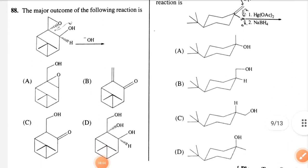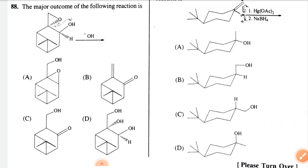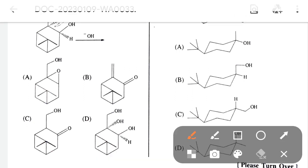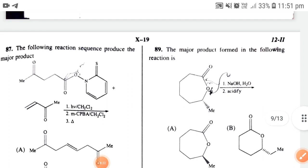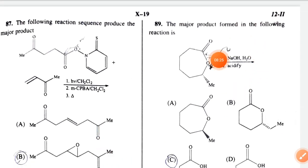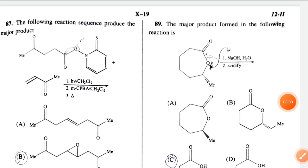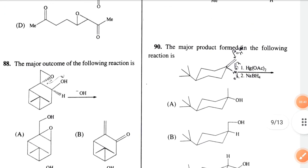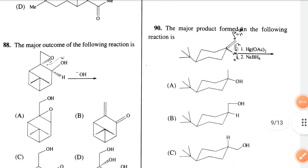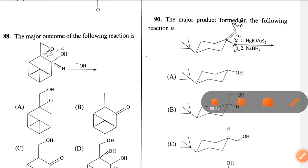Question 88: the correct option is option A. Question 89: the major product formed in this reaction — the reagent NMH and H2O acidified causes hydrolysis of the ester. The correct option is option C.